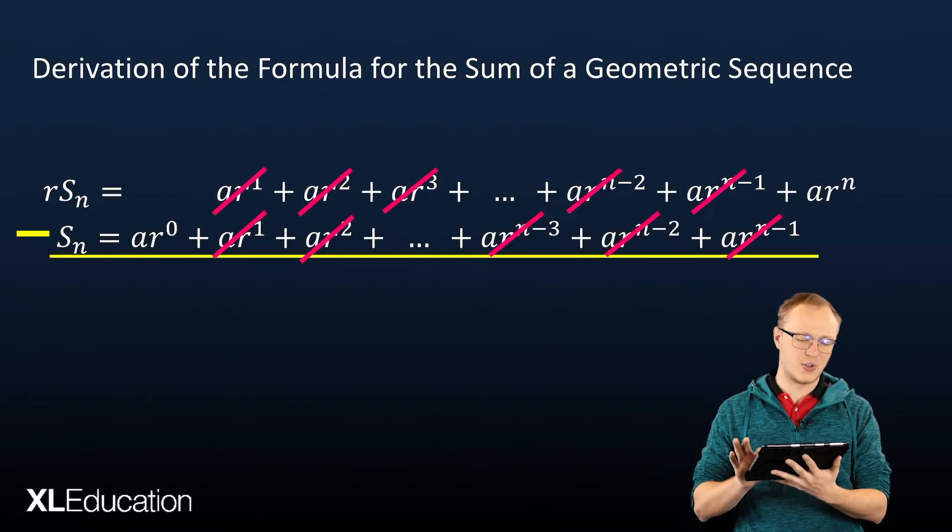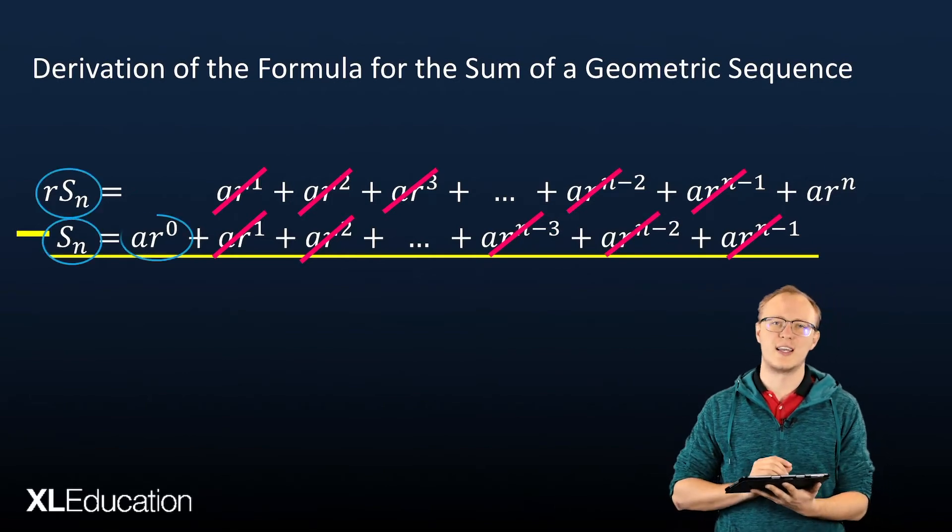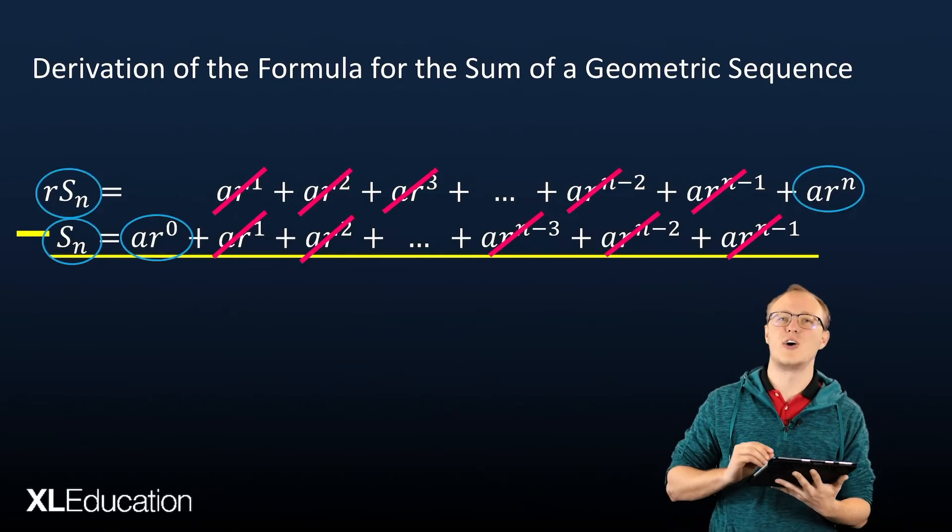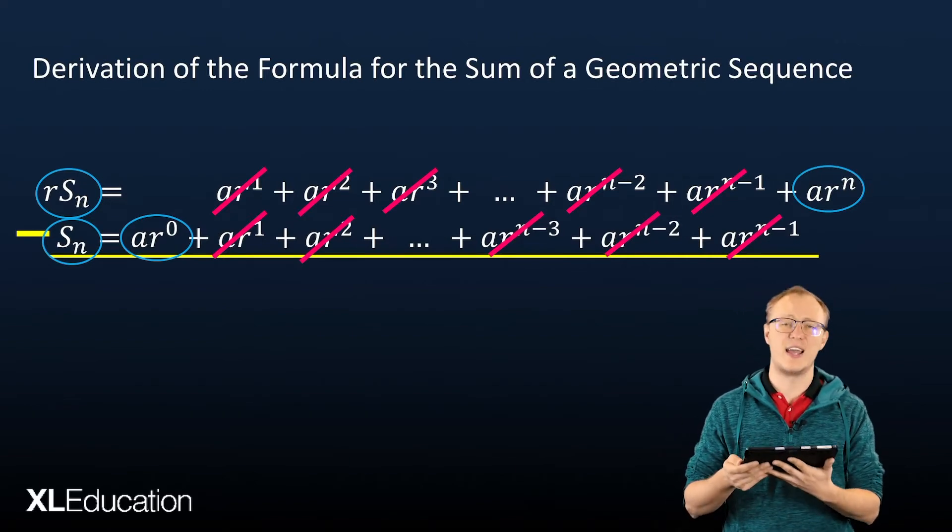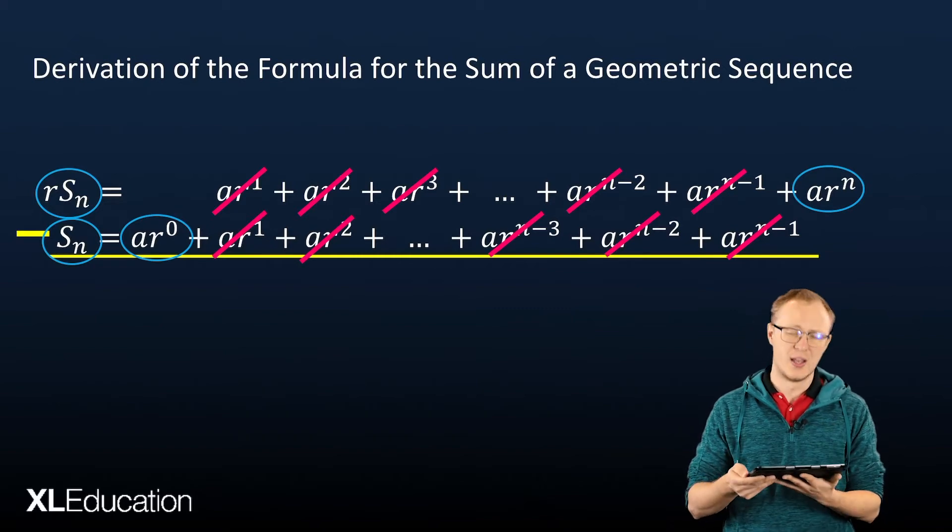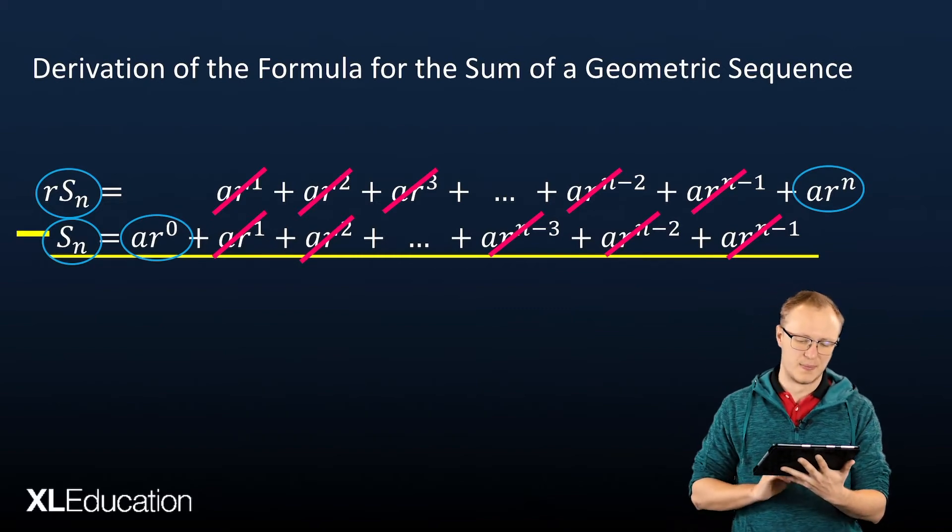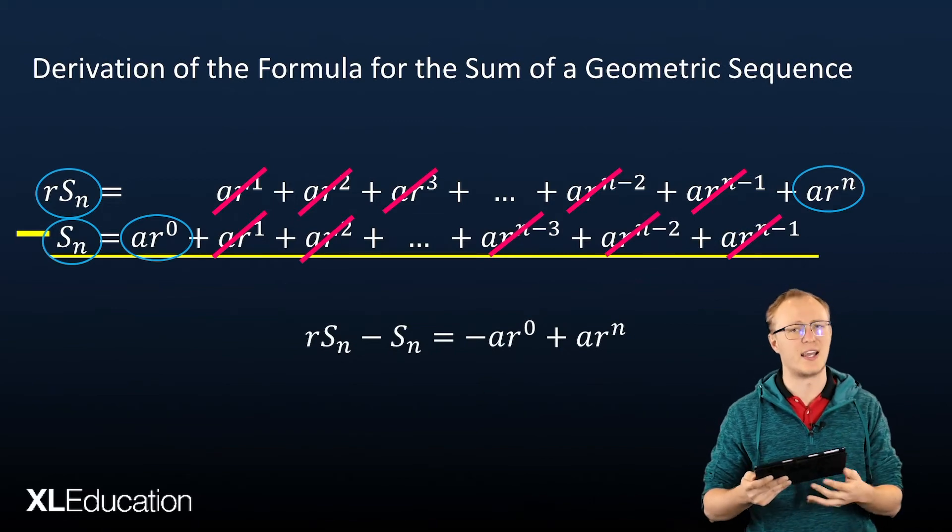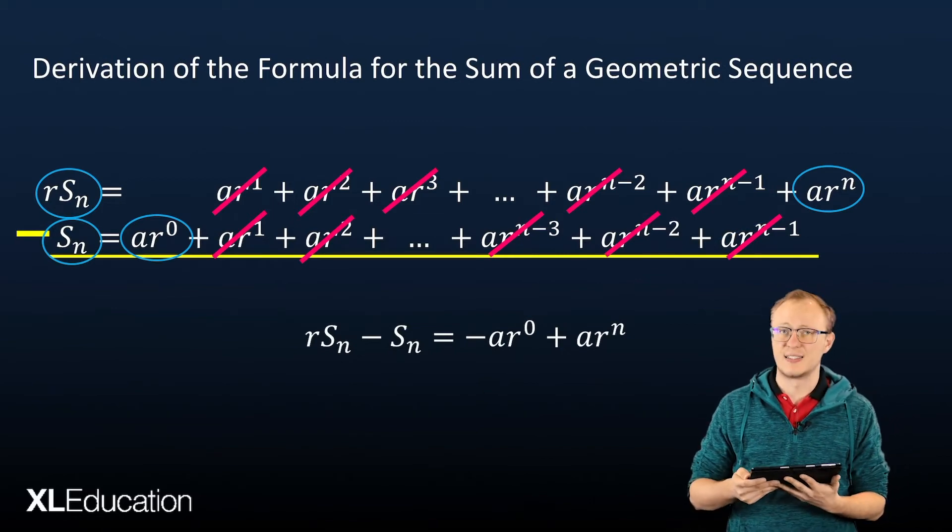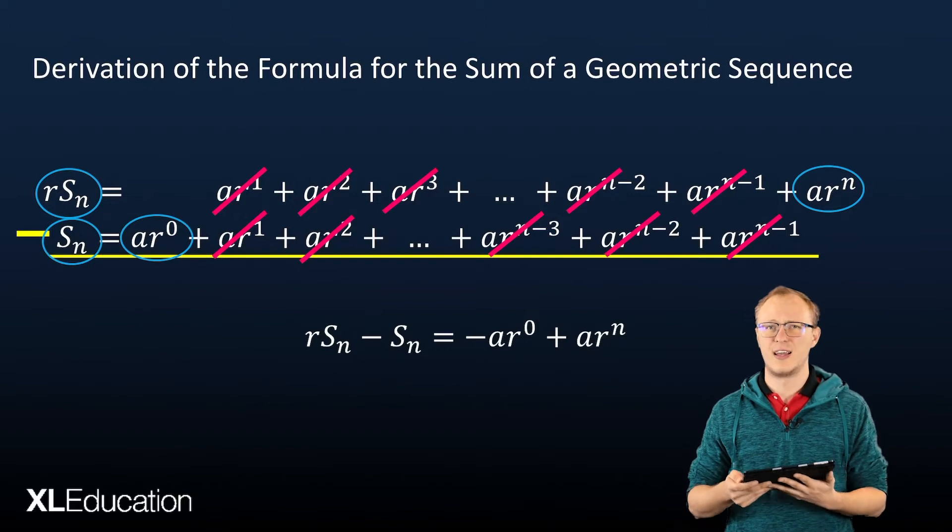And all that you're going to have left is rSn at the top and ar to the n at the top. And at the bottom, you'll have Sn and ar to the 0. So the expression becomes rSn minus Sn is equal to minus ar to the 0 plus ar to the power of n.